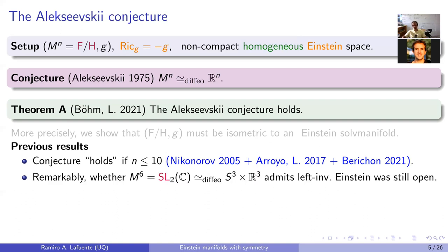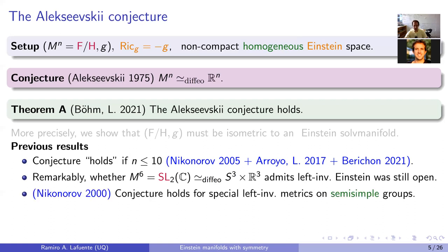One exception that is a bit embarrassing to state: it was not known whether the Lie group SL(2,C), a simple Lie group diffeomorphic to S^3 × R^3, admits left-invariant Einstein metrics. By the conjecture it should not, but this was open. This illustrates how complicated the algebraic equations are — even in low dimensions it's very hard to tell whether solutions exist.